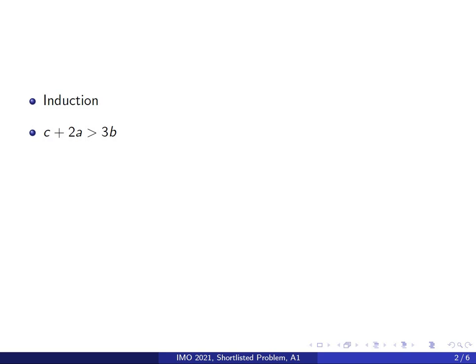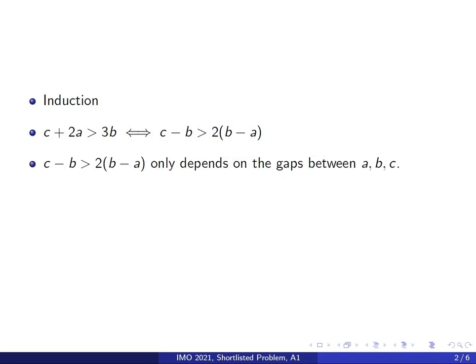The way I dealt with that was to turn this inequality into something a bit more symmetric. I subtracted B from both sides and subtracted 2A from both sides. That tells me C minus B is greater than 2 times B minus A, which means the difference between the larger two numbers must be more than twice the difference between the smaller two numbers. Notably, this inequality only depends on the gaps between A, B, C — if you increase A, B, C by any integer, the inequality does not change.